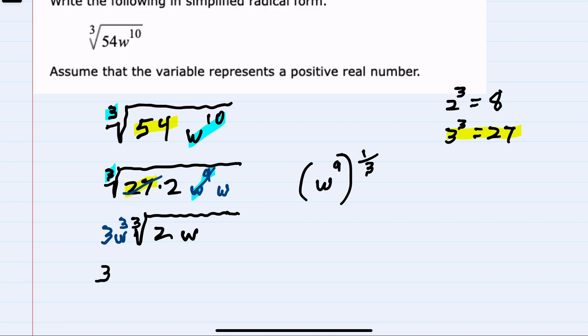So in simplifying, we have pulled a 3 outside the radical, a w to the 3rd power outside the radical, and then we are left with just the 2 and a single w inside the radical.